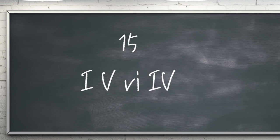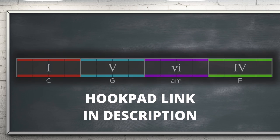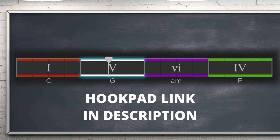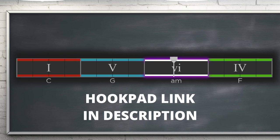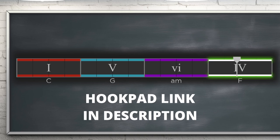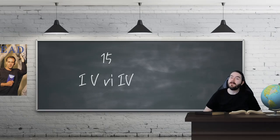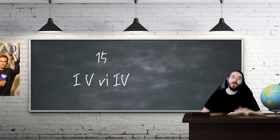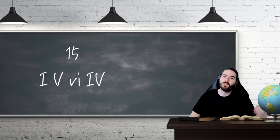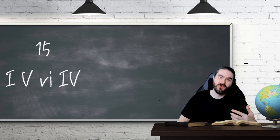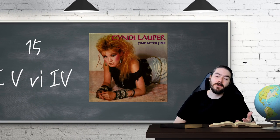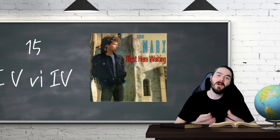Let's start with possibly the most popular core progression in the world: 1-5-6-4. Examples will be in the key of C major and played in Hook Pad. This chord progression is everywhere. Although maybe not as popular today as it once was, it still has the power to draw in listeners. Examples include Time After Time by Cindy Lauper and Right Here Waiting by Richard Marks.